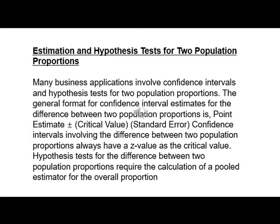Estimation and hypothesis tests for two population proportions. Many business applications involve confidence intervals and hypothesis tests for two population proportions. The general format for confidence interval estimates for the difference between two population proportions is: point estimate plus or minus critical value times standard error. Confidence intervals involving the difference between two population proportions always have a z-value as the critical value.